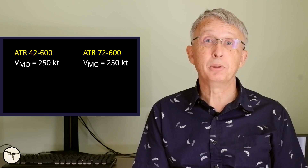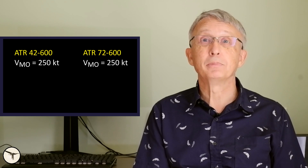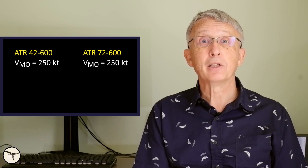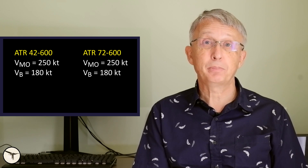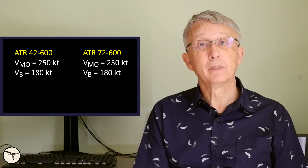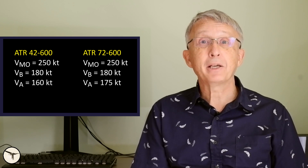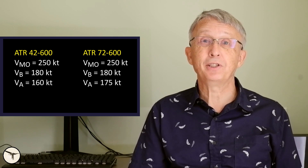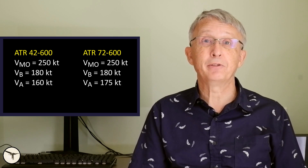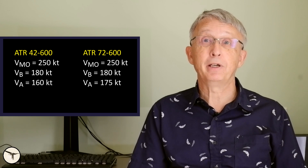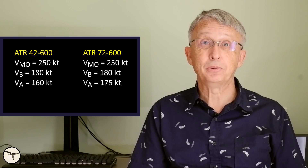Both variants have the same Maximum Operating Speed VMO of 250 knots, and the same Rough Air Speed VB of 180 knots. The Maximum Maneuvering Speed VA is 160 knots for the ATR 42 and 175 knots for the ATR 72.